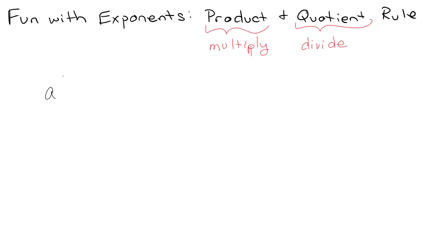A lot of times we'll start off giving you something like this: b to the m times b to the n is equal to b to the m plus n. And then they'll say you should memorize this because it is true. So let's talk about what this actually means.